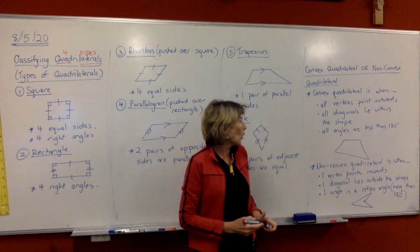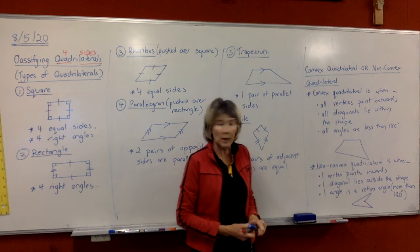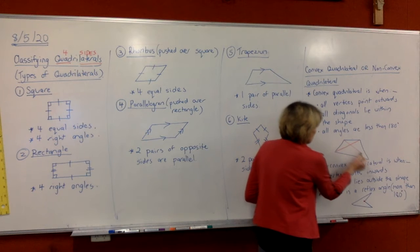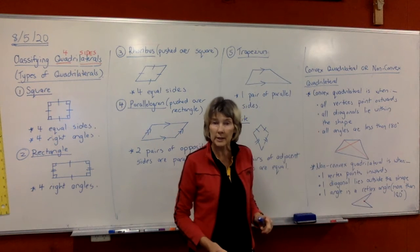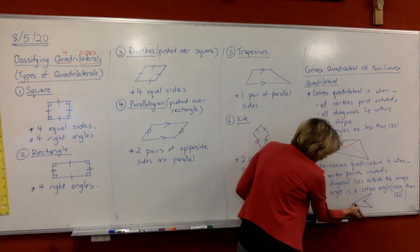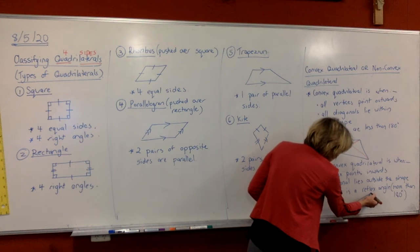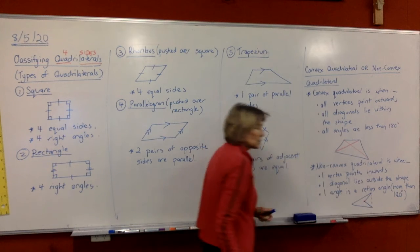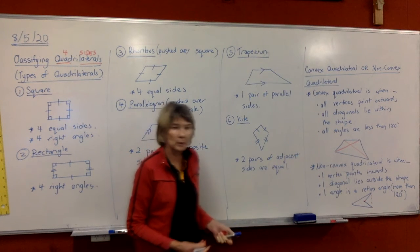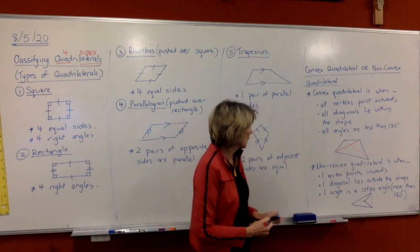Up here we have all diagonals aligned within the shape. So if I drew in the diagonals, you can easily draw those inside the shape. But over here, one of the diagonals, so that one's okay from there to there, but this one joining here to here, that diagonal is outside the shape. So we don't normally deal with diagonals outside the shape.